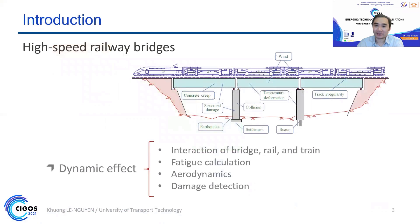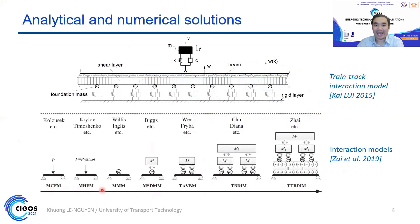High-speed railway is a type of structure that requires a particular design, control for reliability and safety. One of the essential points when analyzing the dynamic behavior of bridges is the consideration of the interaction between the bridge, rail, and train moving with high velocity. From that, we can identify problems related to fatigue and damage. In the figure on the slide, the advancement history of the interaction model was presented.